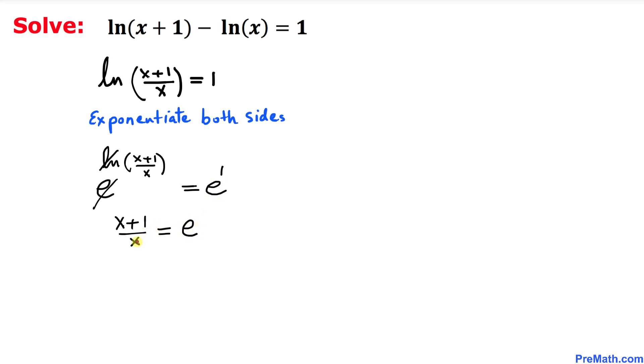Now let's remove this fraction by multiplying x on both sides. So we end up on the left hand side with x plus 1 equal to x times e.